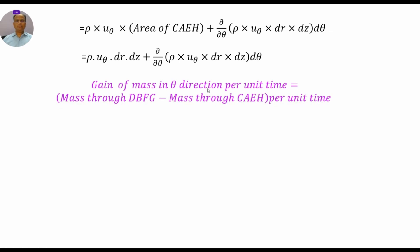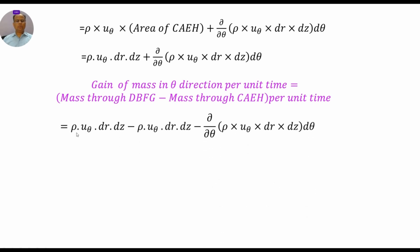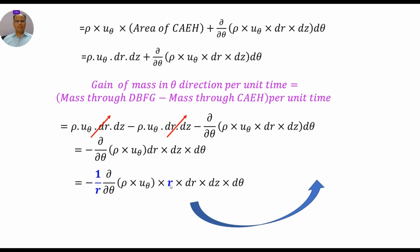The gain of mass in the theta direction per unit time is mass in minus mass out. The first two terms cancel, leaving: −(∂/∂θ)(ρ · u-theta · dr · dz)·dθ. Multiplying and dividing by r to convert to dV (where dV = r·dθ·dz·dr), the final expression is: −(1/r)(∂/∂θ)(ρ · u-theta)·dV. This is the quantity of mass gain in the theta direction.